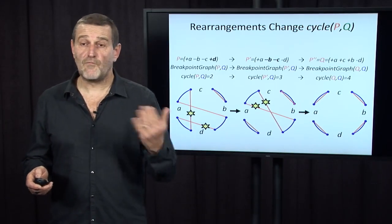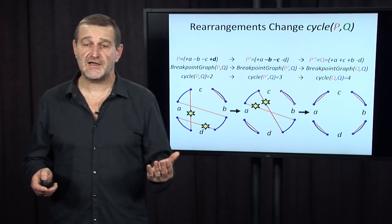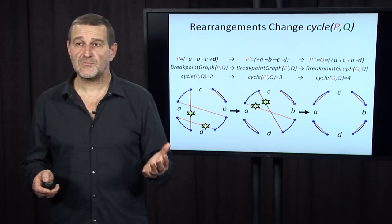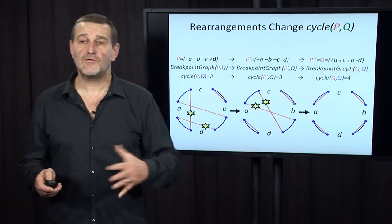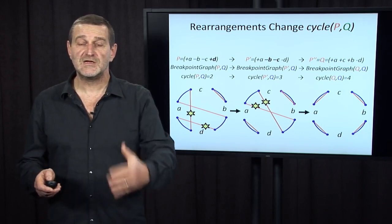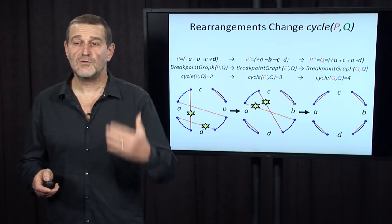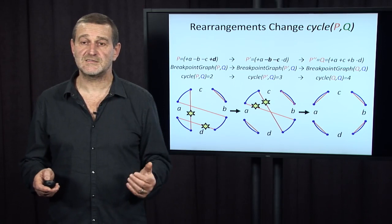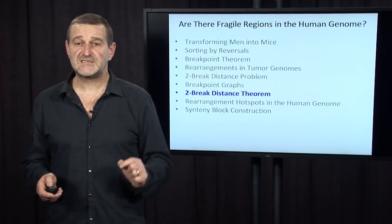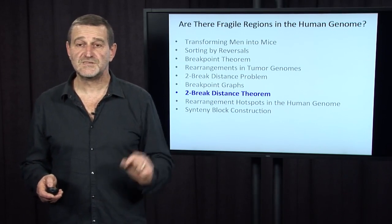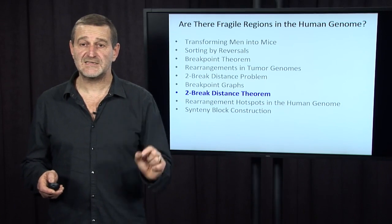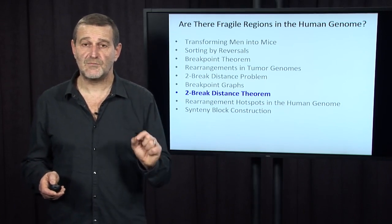And this is just an example of one possible scenario for rearrangement of genome P into genome Q. But it doesn't matter what the scenario is. It always will be the change from cycle PQ to maximum number of cycles in the graph. And armed with this observation, we are ready to prove the two break theorem that will prove very important for our analysis of the random breakage model.